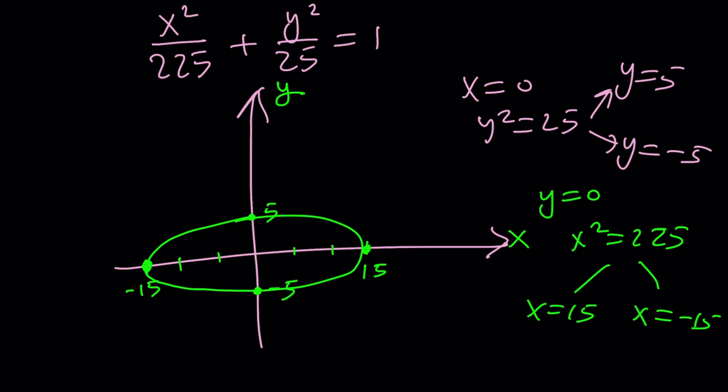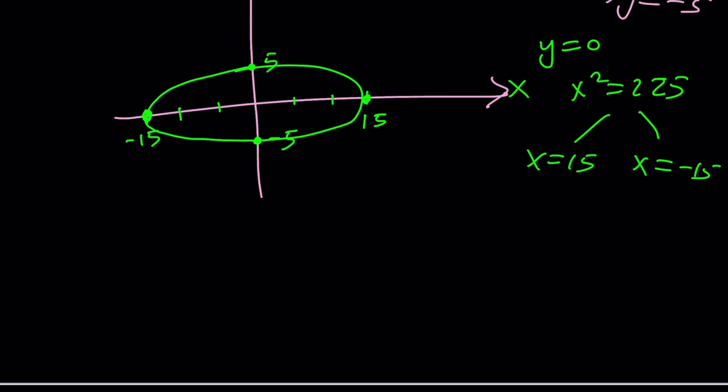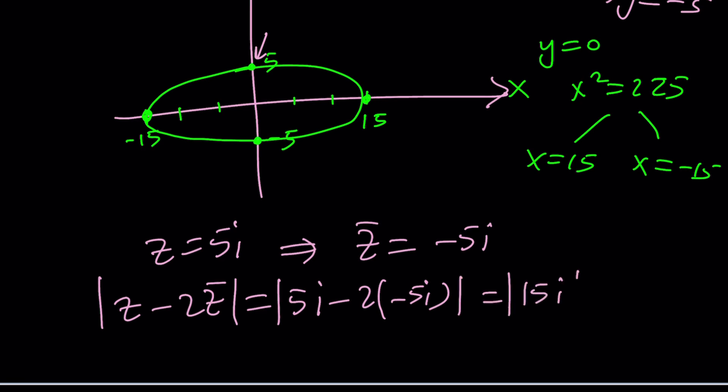In other words, what is the solution to this problem? Any point on this ellipse is a solution. But if you really want to be particular about it, for example, pick this point, that's going to be 5i. If z is 5i, it should satisfy this equation. Let's check it out. If z is 5i, z̄ is -5i. The absolute value of z - 2z̄ is |5i - 2(-5i)| which is |5i + 10i| = |15i| = 15.